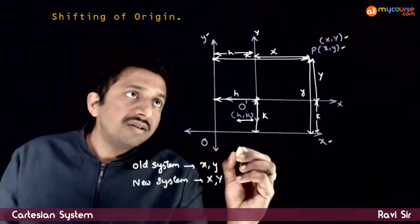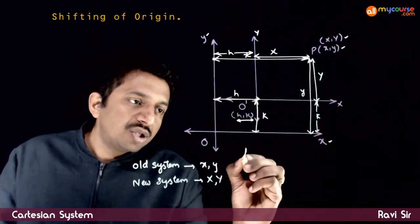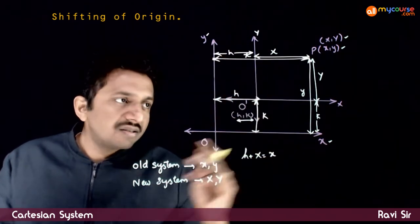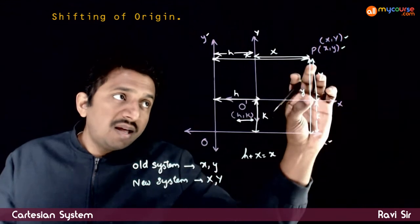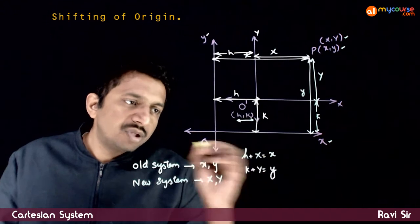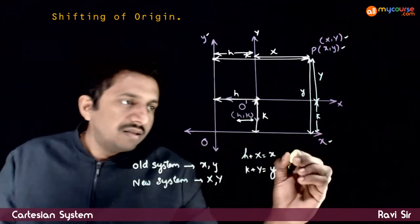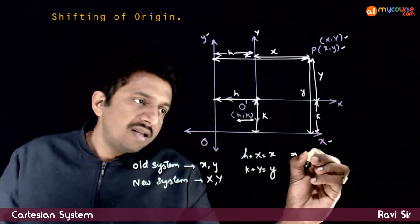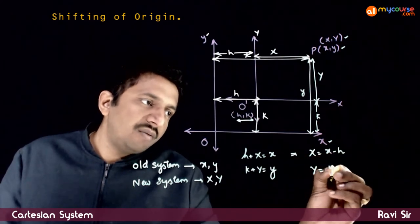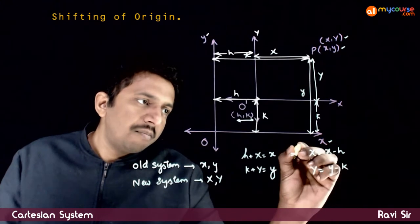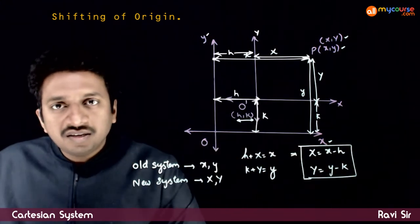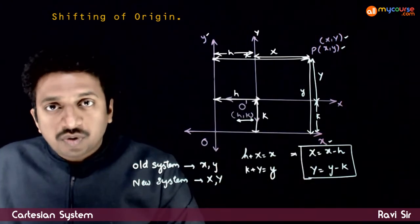So what are the relations? As you can see, h plus capital X equals small x, and k plus capital Y equals small y. This implies: capital X equals small x minus h, and capital Y equals small y minus k. This is the simple relation between capital X, capital Y and small x, small y.